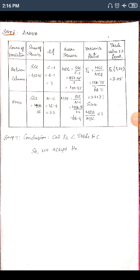We look up the table value at 5% level of significance for F with degrees of freedom (3, 22). From the F-distribution table, F(3, 22) at 5% = 3.05. This is the critical value we will compare against our calculated value.